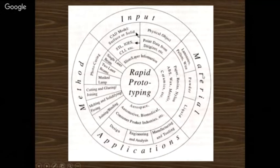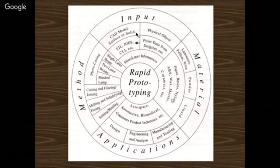The materials used for producing RPT products include paper, resins, nylons, ABS, styrene, wax, metals, and ceramics. Nowadays we have metal rapid prototyping machines where we can use small granules of metallic powder to develop the RPT model. The material may be in the form of liquid or in the form of powder.